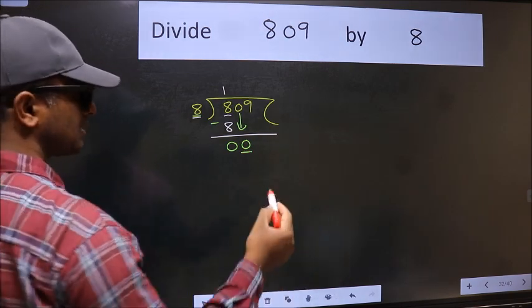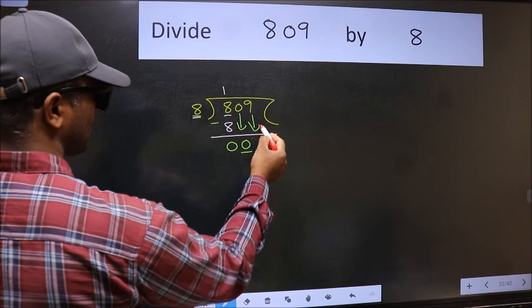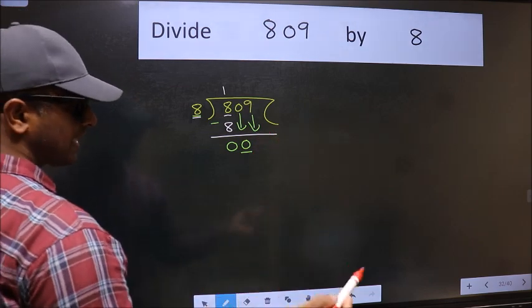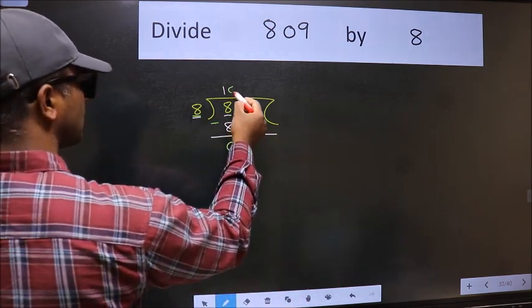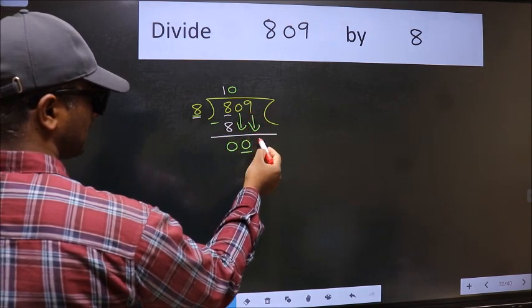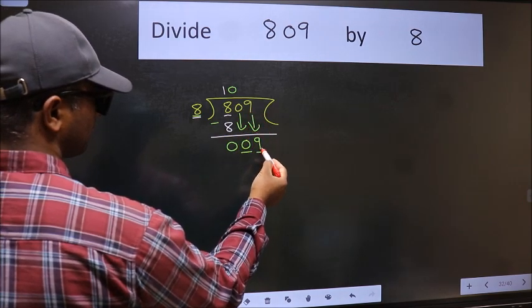So we should bring down the second number. And the rule to bring down second number is, we should put 0 here. Then only we can bring this number down. Now 9.